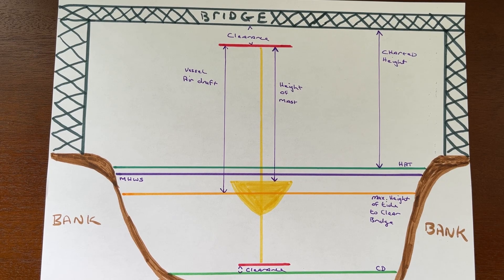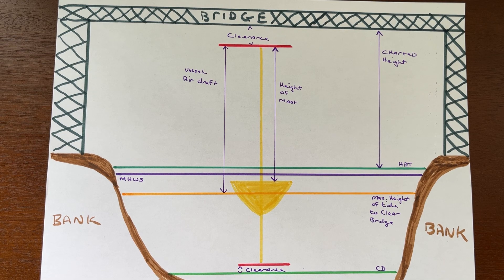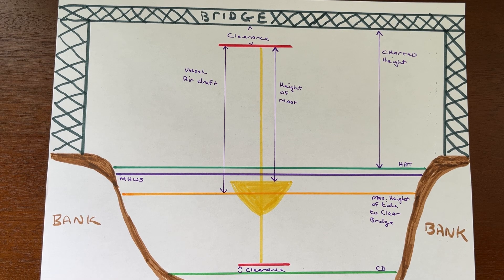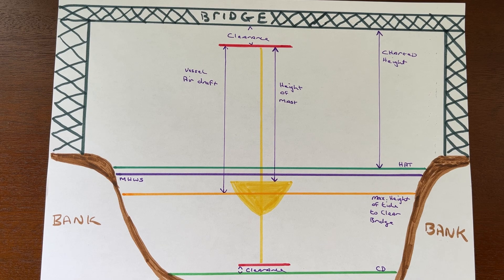We want to calculate our air draft so that we have clearance under an overhead structure such as a bridge or power cable. In order to do that, we need a few numbers. We need to find our high water and low water values for that day so we can calculate our tidal range. From our charts we get our chart datum and the chart height of the bridge, and we also know our own vessel's draft and mast height. Using these figures we can calculate what state of tide we can pass under the bridge.